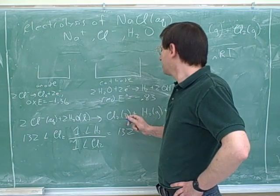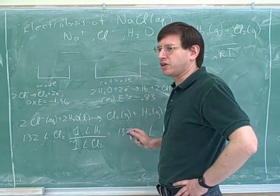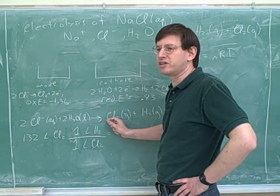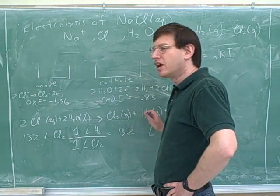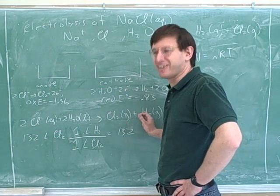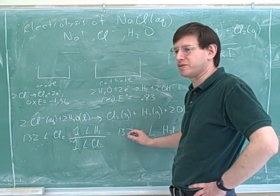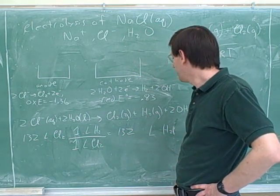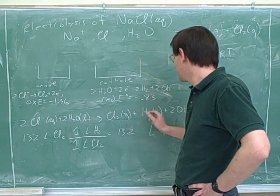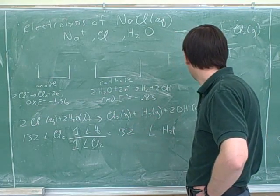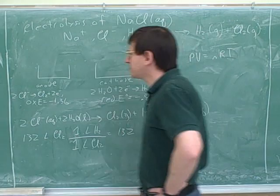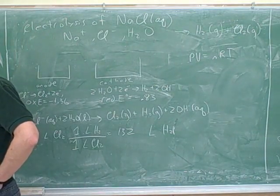Remember that the number of moles is proportional to the volume here. So this is telling us every time we produce one mole of this, we're also going to produce one mole of this. But for an ideal gas, liters are proportional to moles. So this also tells us that every time we produce one liter of this, we produce one liter of this. Basically, it's telling us that we're producing equal amounts of the chlorine and the hydrogen. So since we produced 132 liters of chlorine, we must be producing 132 liters of the hydrogen.